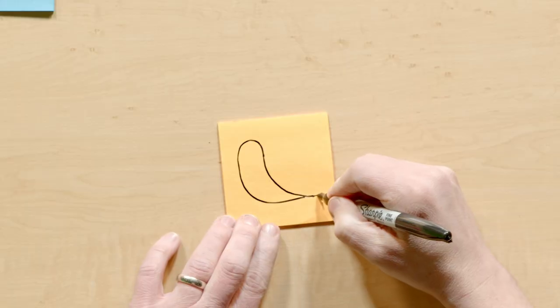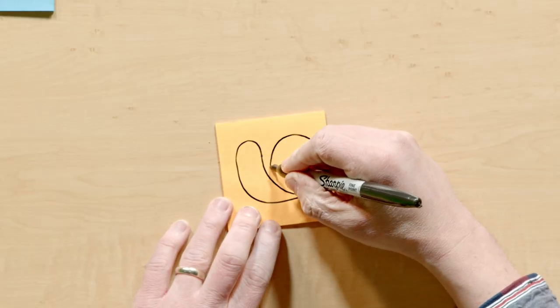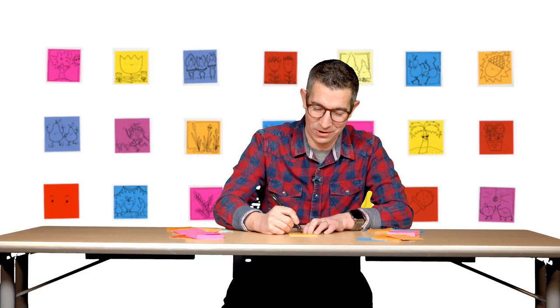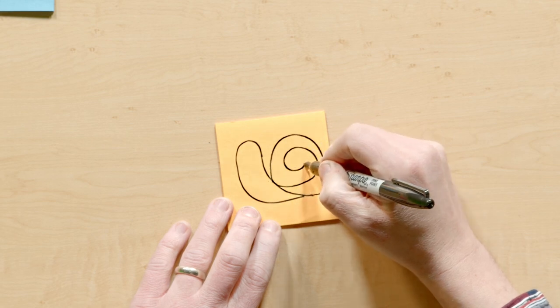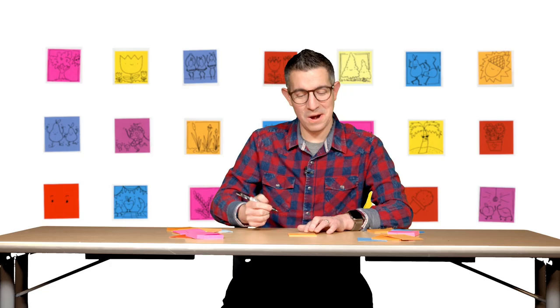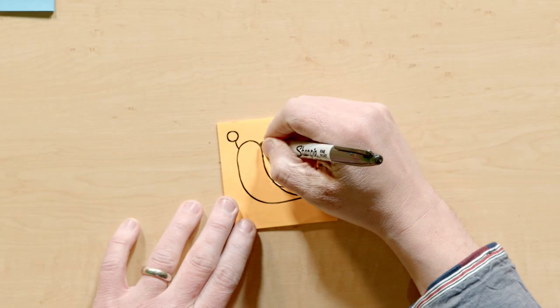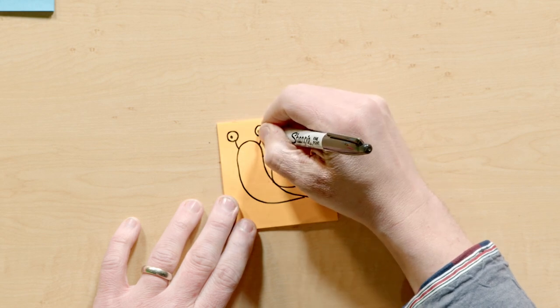And now the shell. Up and around. Up and around. Do you know what's really cool about snail shells? It goes in this little spiral. Around and around and around. Alright, snail's coming along. And its eyeballs are up like this. And the little dots for the pupils.